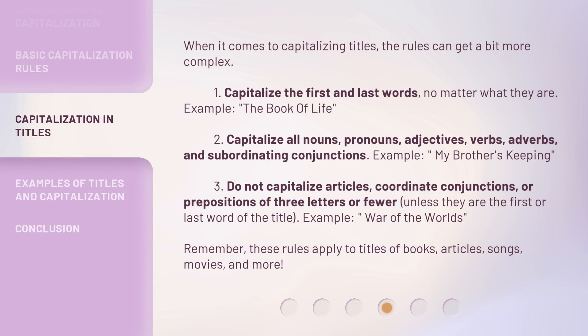When it comes to capitalizing titles, the rules can get a bit more complex. 1. Capitalize the first and last words, no matter what they are. Example: The Book of Life. 2. Capitalize all nouns, pronouns, adjectives, verbs, adverbs, and subordinating conjunctions. Example: My Brother's Keeping. 3. Do not capitalize articles, coordinate conjunctions, or prepositions of three letters or fewer, unless they are the first or last word of the title. Example: War of the Worlds.